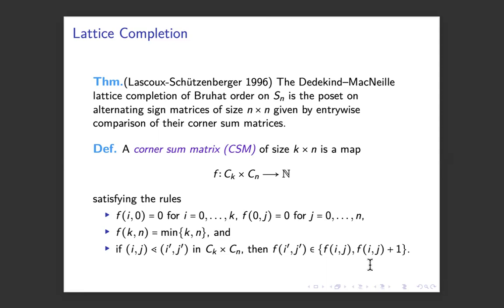We've padded the left-hand column in the bottom with 0s. f of k comma n is always going to be the minimum of k and n. And if you take i, j, and it's covered by i prime, j prime in the poset on ck cross cn, then you either get the exact same value or it can go up by 1. So those simple rules, they actually define the corner sum matrices.